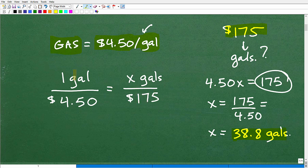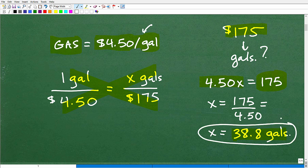So how do I solve this? Well, I can just use the cross product. This is one thing you need to know about proportions. So it's going to be 1 times 175, which is 175, and $4.50 times X. So now I end up with this basic algebra equation right here. And to solve for X, I need to divide both sides of the equation by $4.50, and I get X is equal to 38.8 gallons.